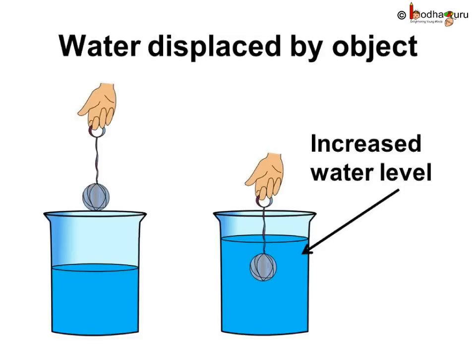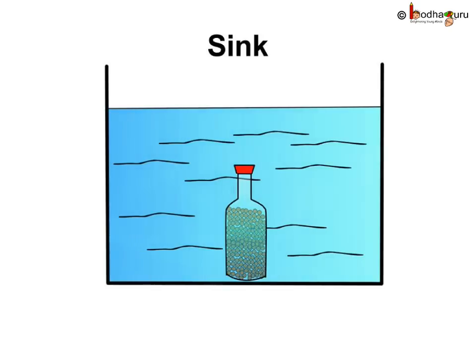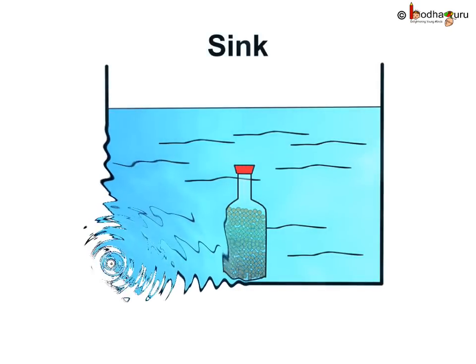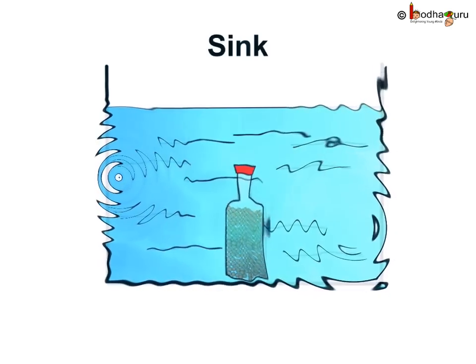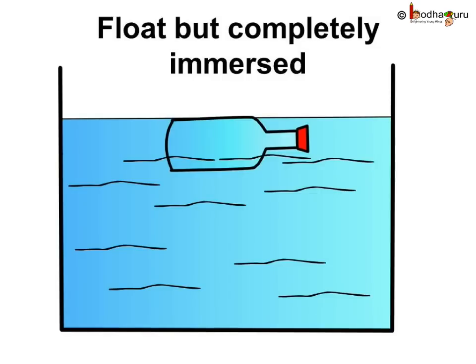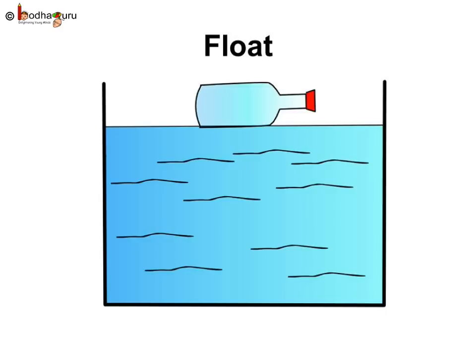What happens when we put some object in water? The water rises, and sometimes it overflows. This is because the object displaced some of the water with its body. If the weight of that object is more than the weight of the displaced water, the object sinks. If the weight of the object is equal to the weight of the displaced water, the object floats but remains completely immersed. And if the weight of the object is less than the weight of the displaced water, it floats on the water.